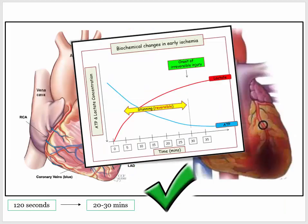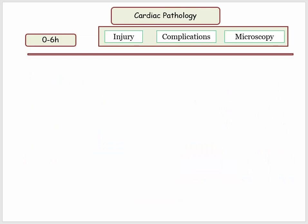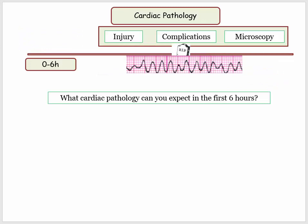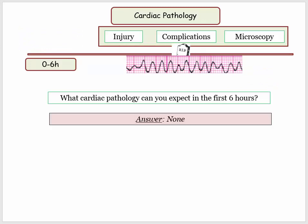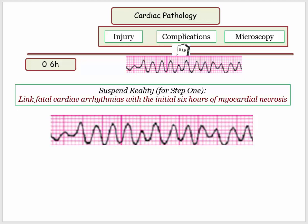Our next stop is the zero to six hour time frame. What cardiac pathology can you expect in the first six hours? None. No cells or microscopy to worry about — just cardiac death from fatal arrhythmia. Proximal occlusion of coronary vessels may result in fatal ventricular arrhythmias in death long before evidence of coagulant necrosis develops. For Step 1, you would be advised to link fatal cardiac arrhythmia with the initial presentation of myocardial ischemia.